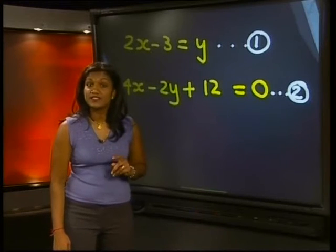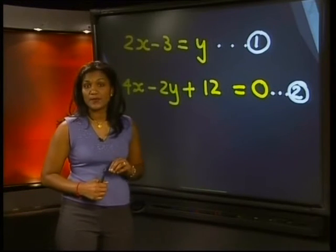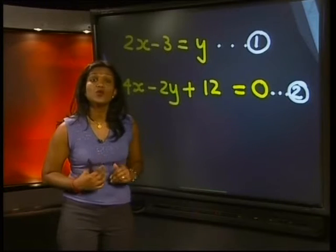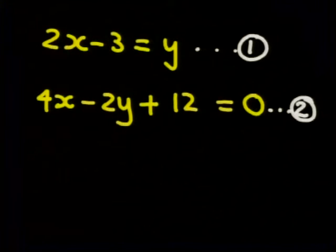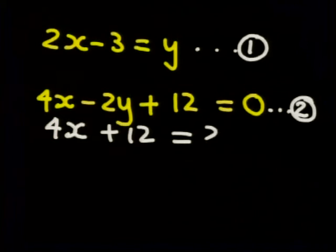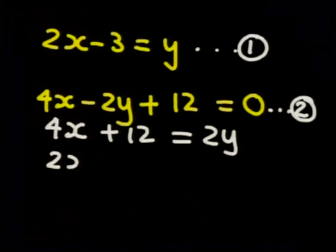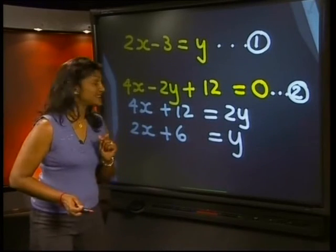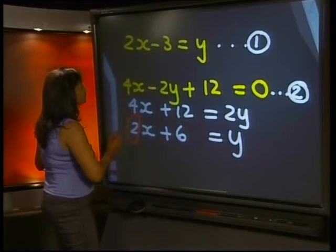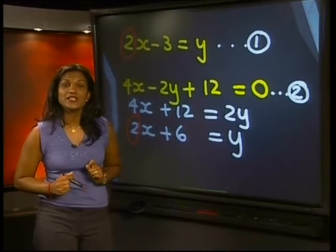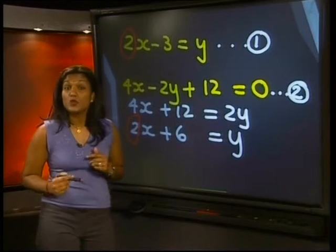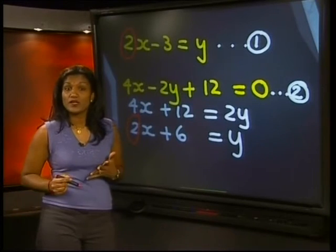A quick way to check this is to put each equation in the form y equals mx plus c and then see what their m values are. Remember, the m value tells us about the gradient of the graph. Now the first equation is already in the form y equals mx plus c. So let's do that to the second equation. So we see that this graph has a gradient of 2 as well as this one. So this is just as we expected. The gradients are equal. The graphs will be parallel, so there cannot be a point where they intersect.